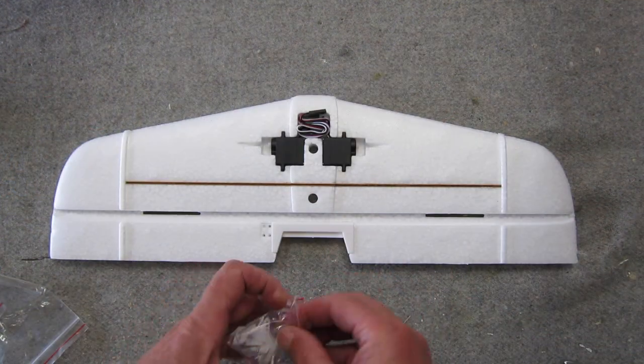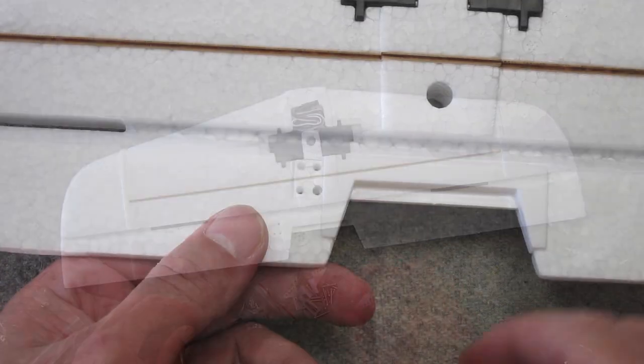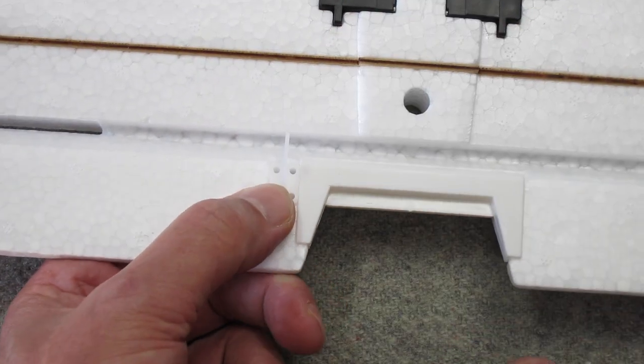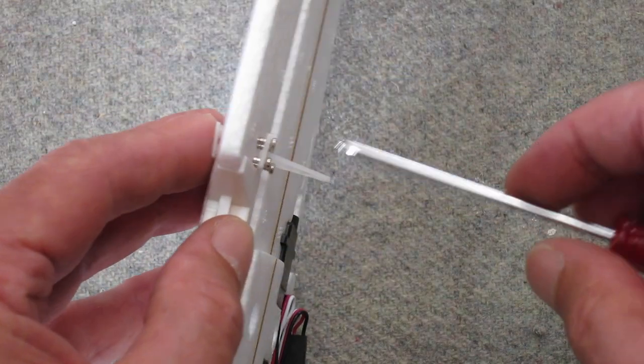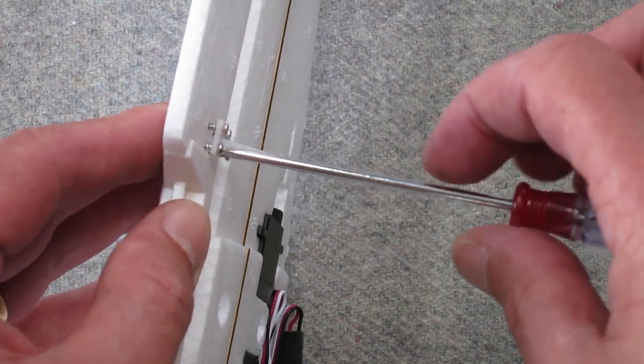Now I'm attaching the control horn to the elevator. They actually provide a spare control horn, which is nice. You just insert the four screws and snug them up into the backing plate on the other side of the elevator.